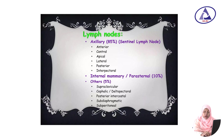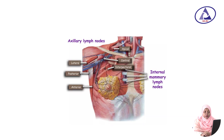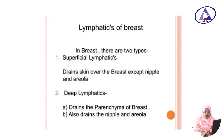The remaining 5% includes supraclavicular, deltopectoral, posterior intercostal, subdiaphragmatic, and subperitoneal lymph nodes. A picture shows the different lymph nodes including the axillary lymph node and internal mammary lymph node. In the breast, there are two types of lymphatic vessels: superficial lymphatics and deep lymphatics.